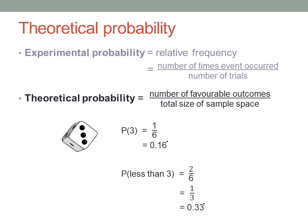Experimental probability is based on the actual outcomes after doing an experiment. Theoretical probability is based on the sample space alone. It's a prediction of what you expect to happen if you do the experiment a sufficiently large number of times.